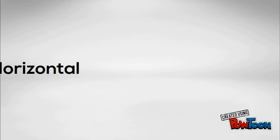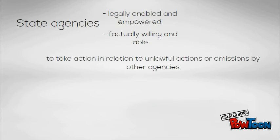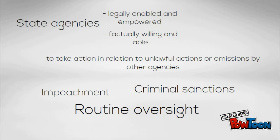Horizontal accountability is concerned with state agencies that are legally enabled and empowered, as well as factually willing and able to take action in relation to unlawful actions or omissions by other agencies. This may include routine oversight, criminal sanctions, impeachment, as well as other mechanisms.